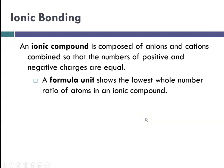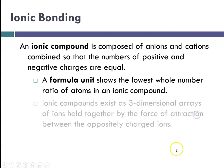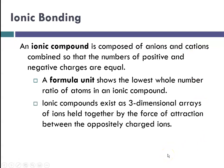Ionic compounds are represented by something called a formula unit that shows the lowest whole number ratio of atoms in an ionic compound. Like all molecular and ionic substances, there's millions and millions of these things hanging out together in a compound, and so the formula unit shows you that lowest whole number ratio of anions to cations. Ionic compounds exist as this three-dimensional array of ions, and they're held together by the force of attraction between oppositely charged ions.